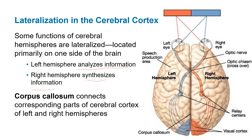Dividing the two hemispheres is the corpus callosum, which connects the corresponding parts of the left and right hemispheres. Interestingly, if your corpus callosum is cut, it doesn't necessarily kill you — people can survive it. People who have really bad seizures with no other options can have it cut. However, if the two hemispheres can't communicate, it leads to interesting things like being unable to control your left hand — it may do something different from what your rational thought intends. Those are extreme cases and exceptions, not the norm.